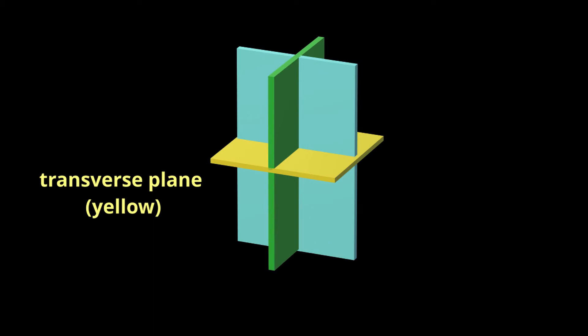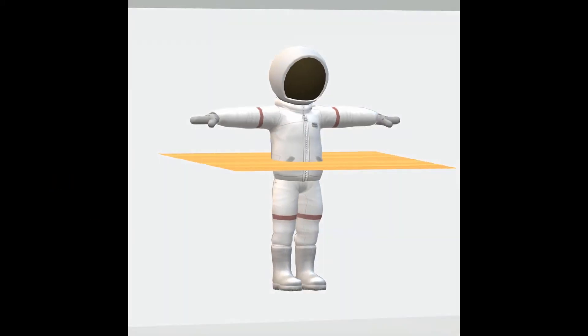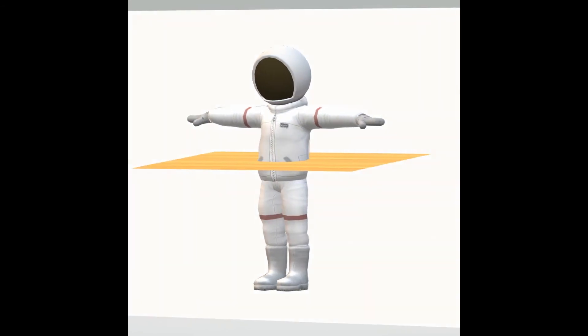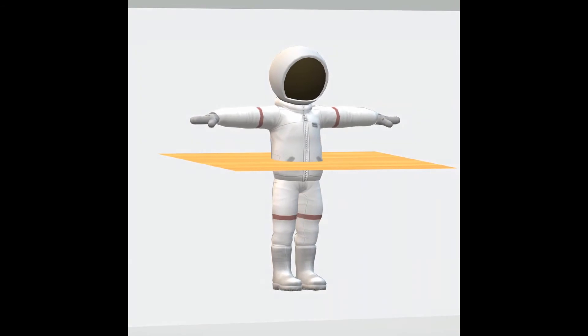Finally, we have our transverse plane, shown here in yellow. The transverse plane divides the body into an upper half and lower half, or superior portion and inferior portion. Motion that occurs in the transverse plane would be considered rotation.